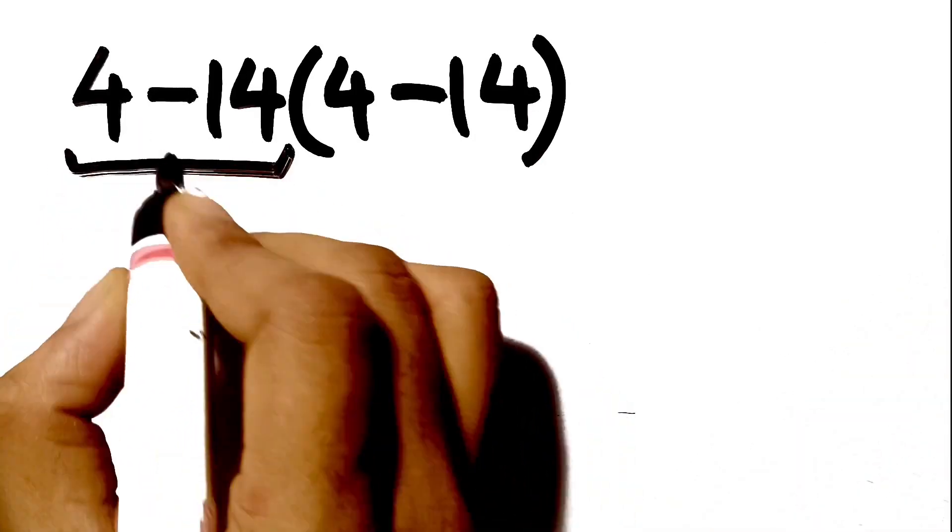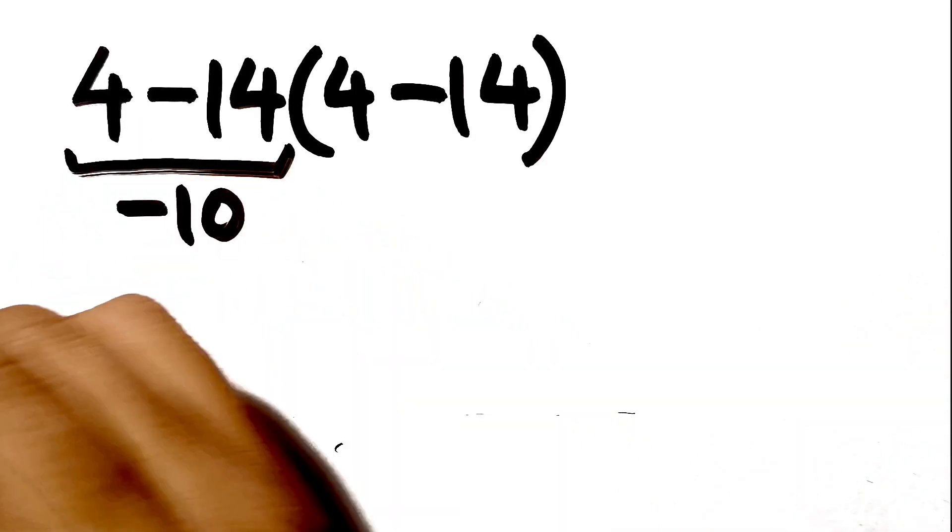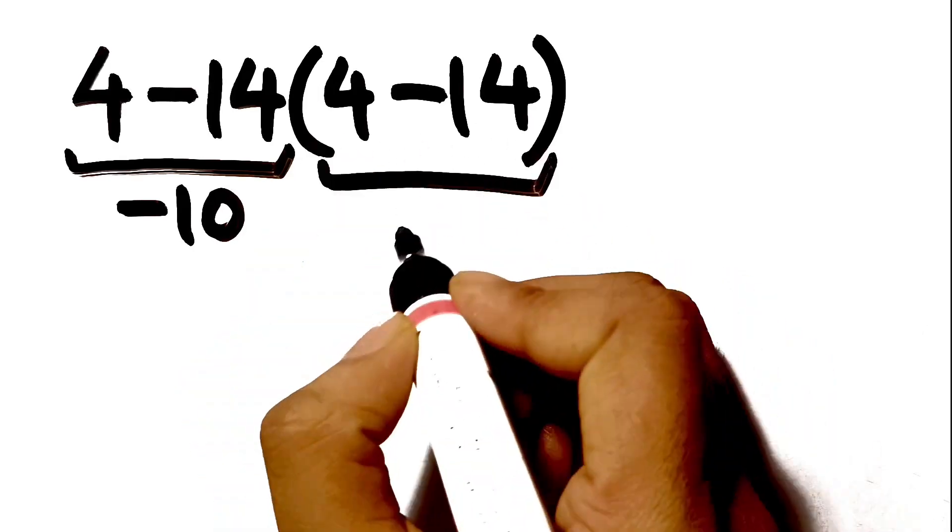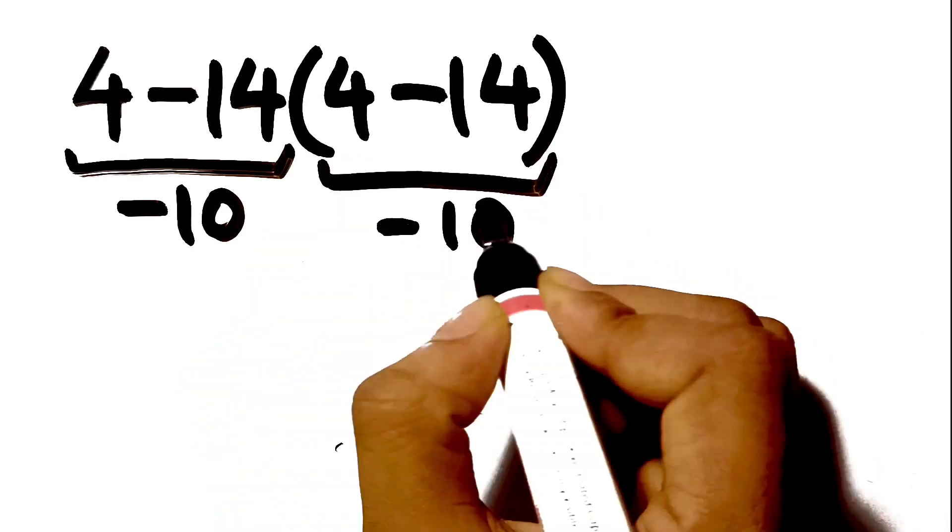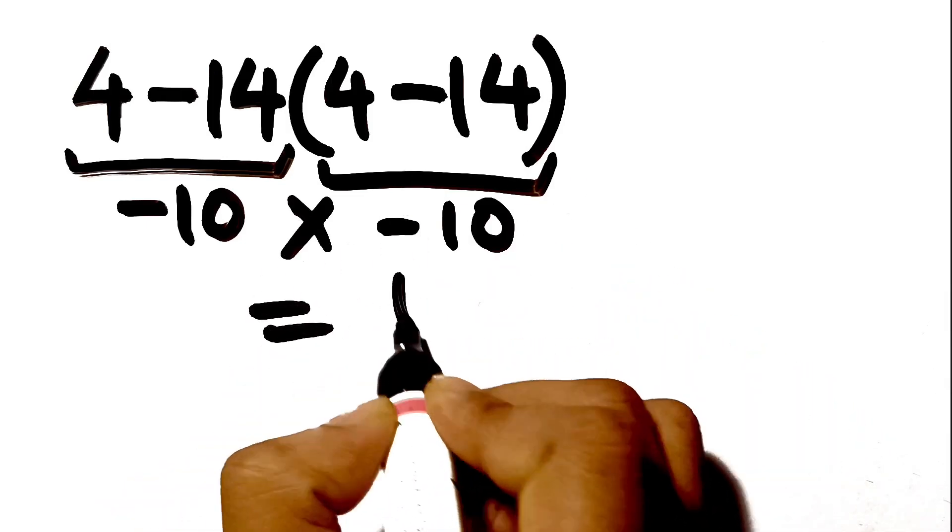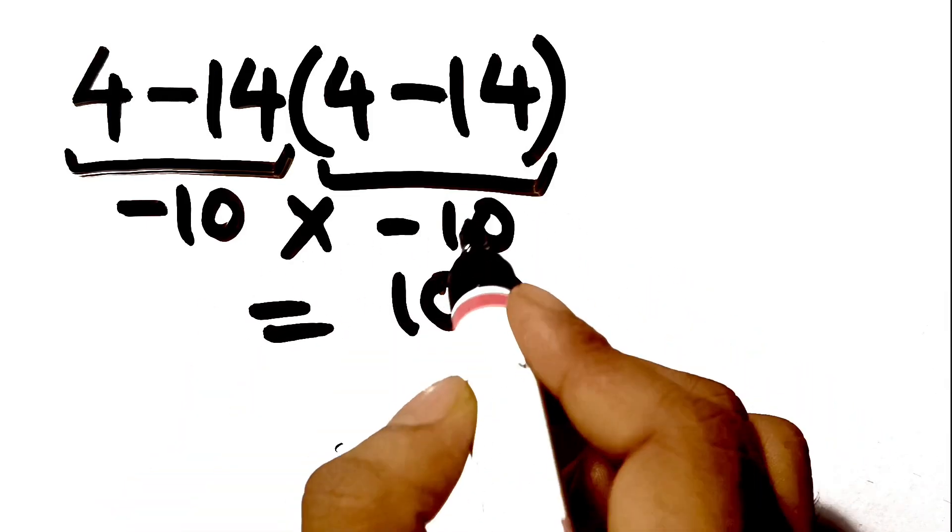The first 4 minus 14 gives us negative 10, and again here we have 4 minus 14 inside the parenthesis, which also gives us negative 10. So negative 10 times negative 10 gives us 100, but this answer is not correct.